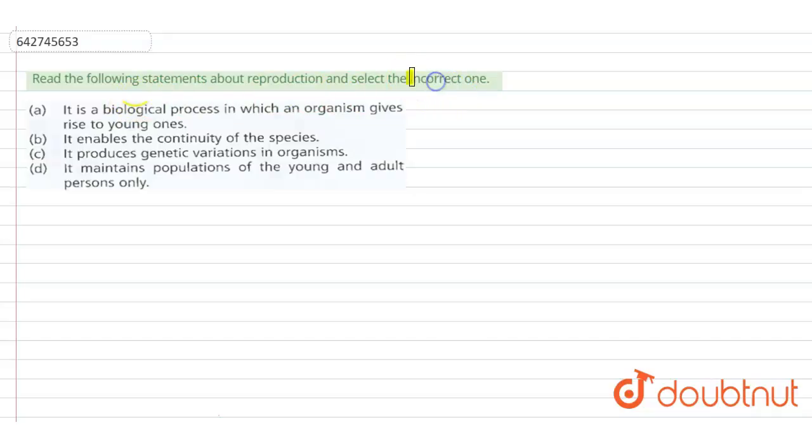We do not need to select the correct one, we need to select the incorrect one. So let's see the options. Option (a): It is a biological process in which organism gives rise to young ones. Now is this correct?